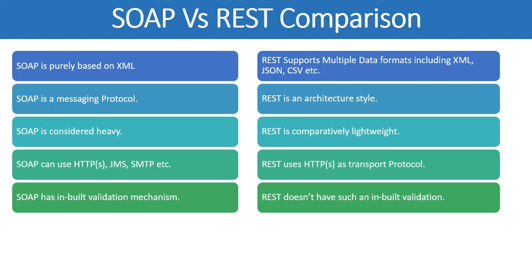The next comparison is that SOAP has an inbuilt validation mechanism, which is one major reason I sometimes prefer SOAP web services over REST. REST does not have any such inbuilt validation. In SOAP, whenever a client sends a request, validation is automatically performed based on the structure and the XSD — for example, checking enumerations for element values or other constraints defined in the XSD when creating the web service.